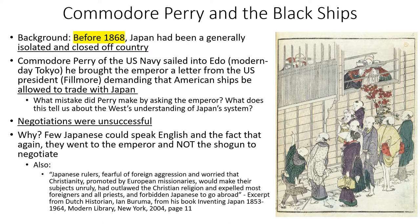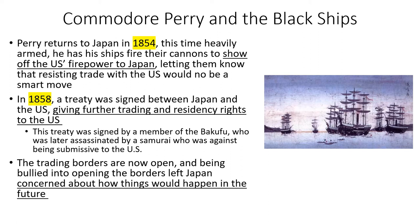The negotiations were unsuccessful — because Perry went to the emperor, who held no real power at that point. It was essentially like demanding something from a random person who has no authority over what you're asking for. Perry should have gone to the Tokugawa clan. The U.S. didn't really understand Japan's system and assumed the emperor held power. Additionally, very few Japanese knew English, leading to significant mistranslation, which is also part of why they ended up approaching the emperor rather than the shogun.